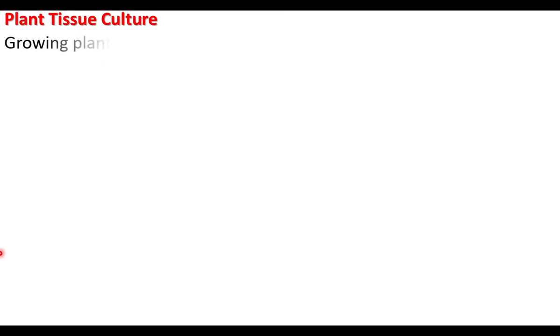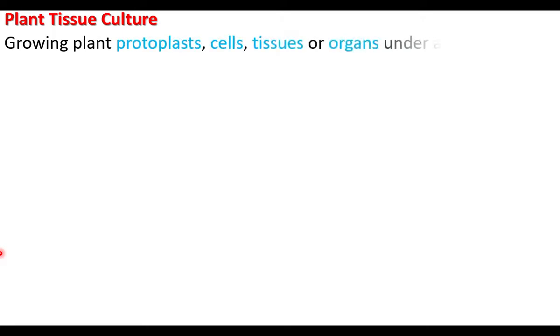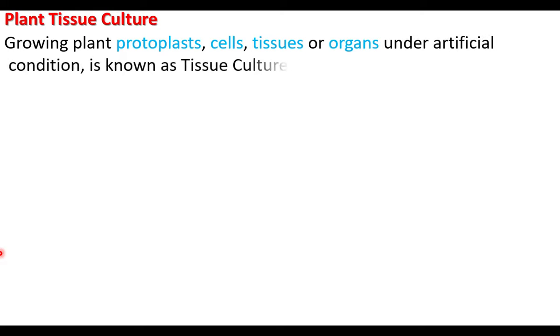Culture means growing. Plant tissue culture is the growing of plant tissues, cells, organs, etc. Growing plant protoplasts, cells, tissues, and organs under artificial conditions is known as tissue culture.